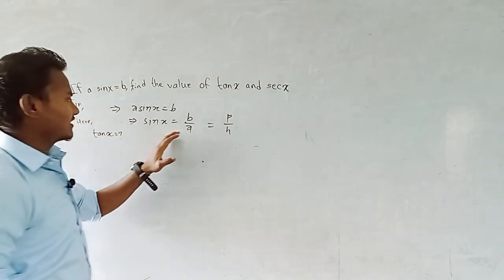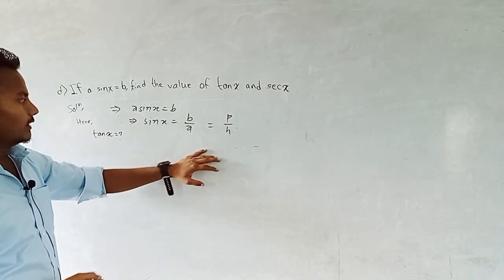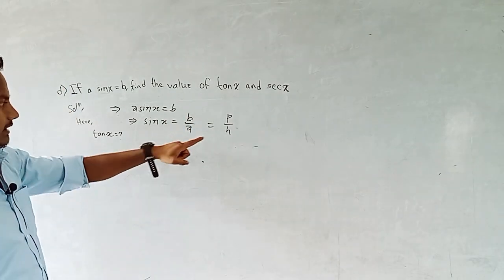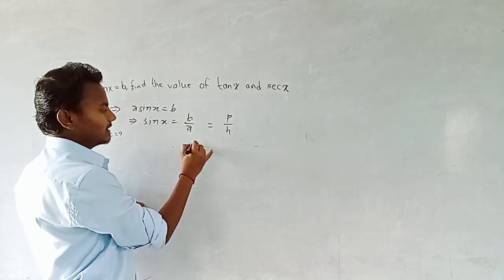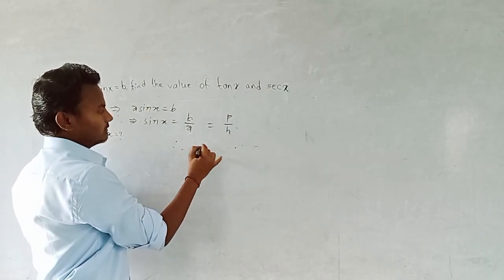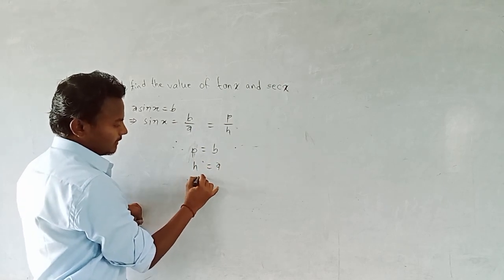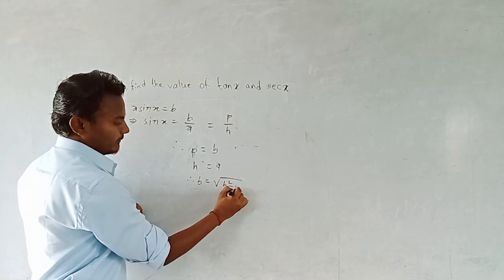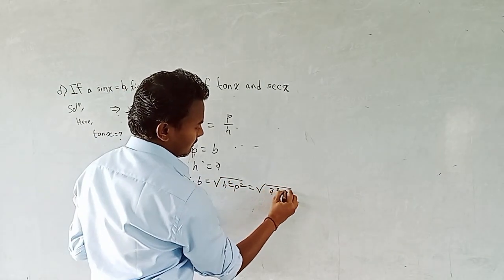Since sin x equals p by h, we set p equal to b and h equal to a. So the base equals the square root of h squared minus p squared, which becomes the square root of a squared minus b squared.